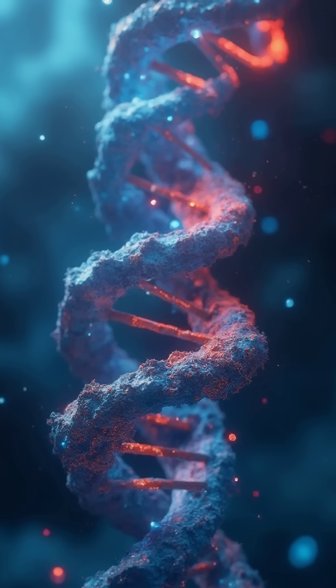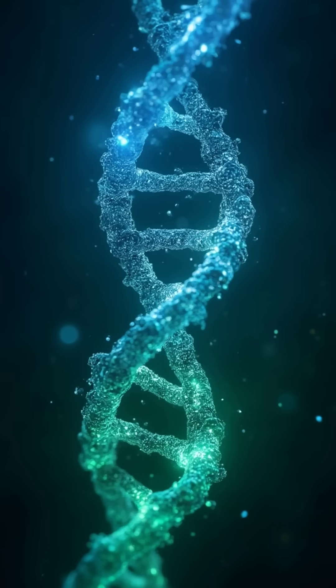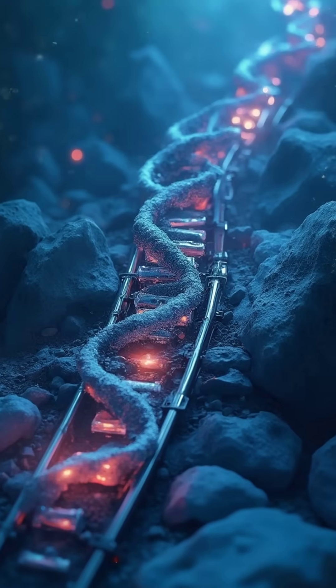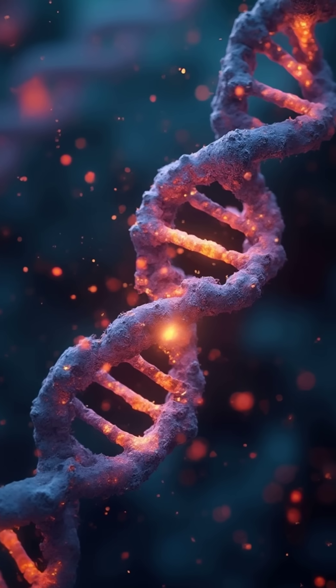Yo, it starts with the ladder that's twisting tight, two strands spiraling left and right. Backbone sugar with a phosphate chain, like a railroad track for the genetic train. AT and GC,